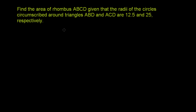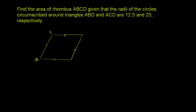So let's draw ourselves rhombus ABCD. That's a decent rhombus right over there. We know that all the sides of a rhombus are equal. And let's label the vertices: A, B, C, D. So there we go — rhombus ABCD.